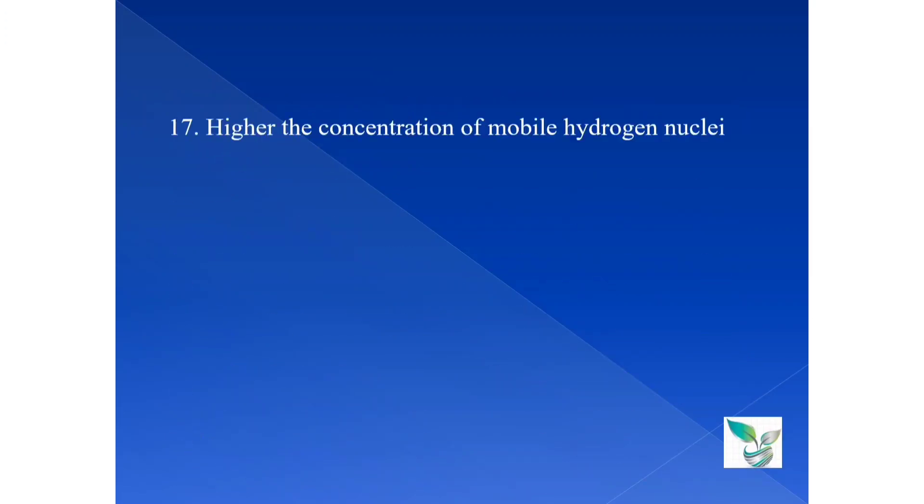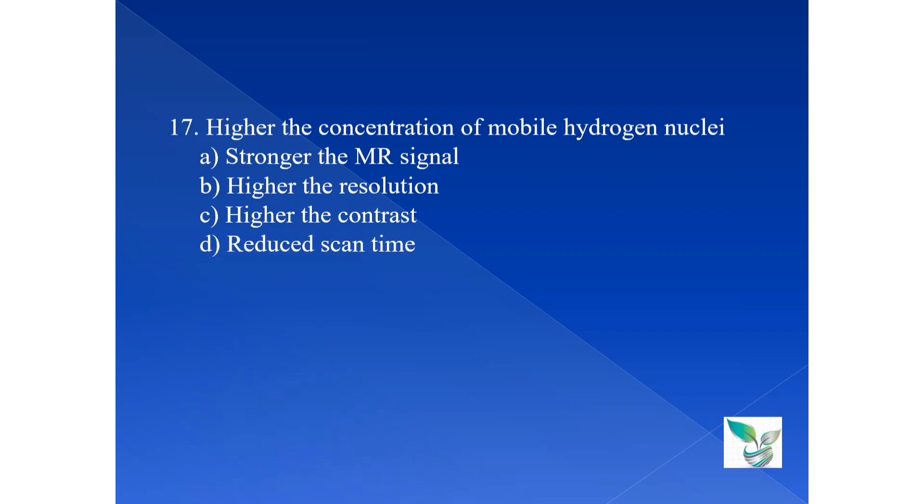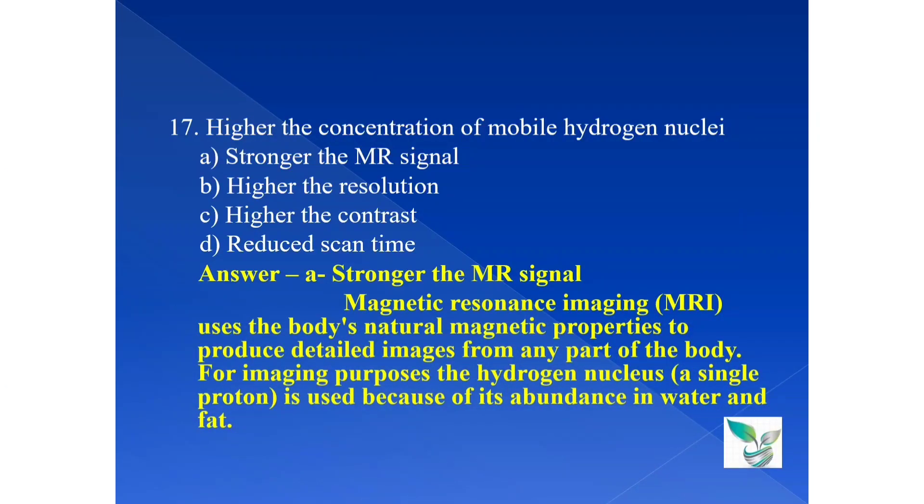Moving on to the next question, question number 17. Higher the concentration of mobile hydrogen nuclei: option A stronger the MR signal, option B higher the resolution, option C higher the contrast, and option D is reduced scan time. The answer is option A stronger the MR signal. Magnetic resonance imaging MRI uses the body's natural magnetic properties to produce detailed images from any part of the body. For imaging purposes, the hydrogen nucleus, a single proton, is used because of its abundance in water and fat. As you all know, the chemical formula for water is H2O, so abundance, that is 90% of the human body comprises of water.